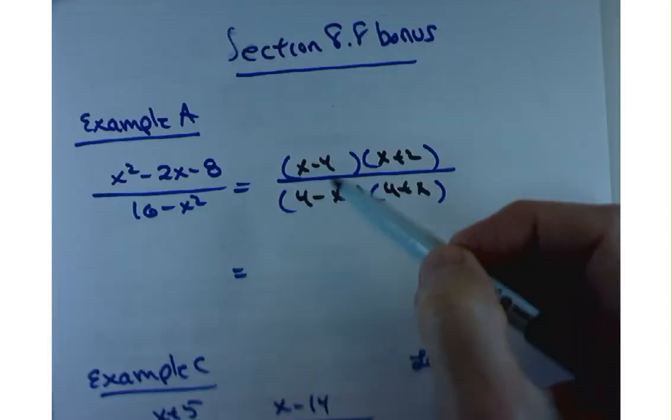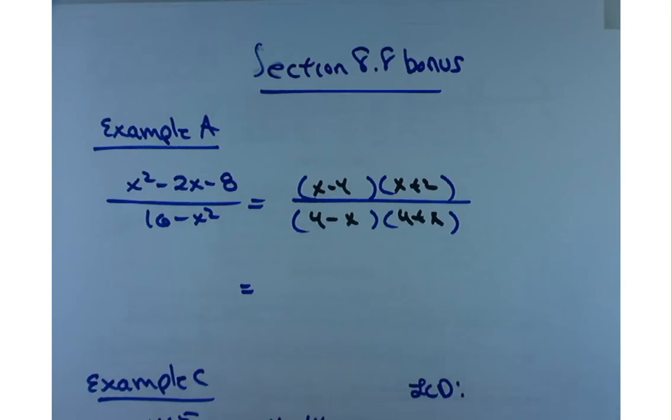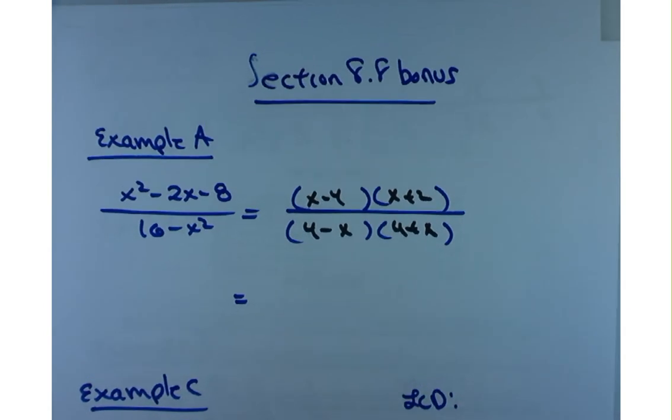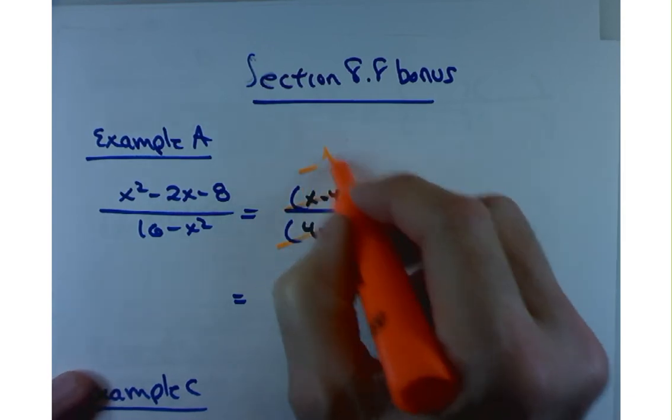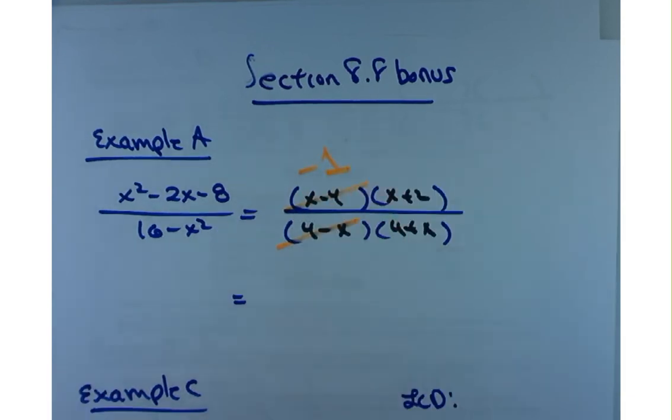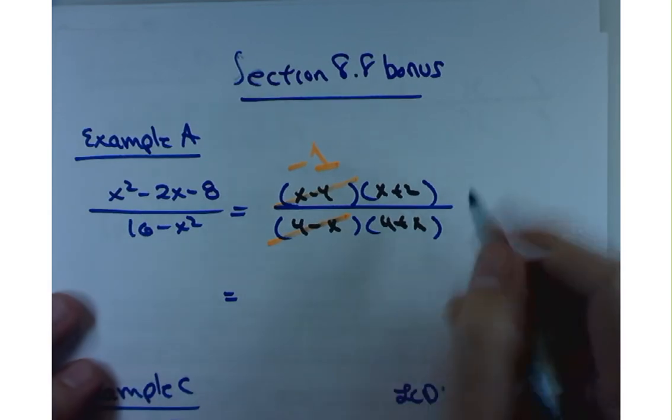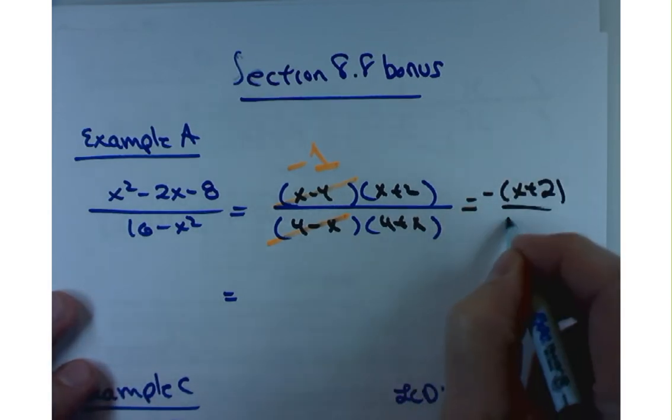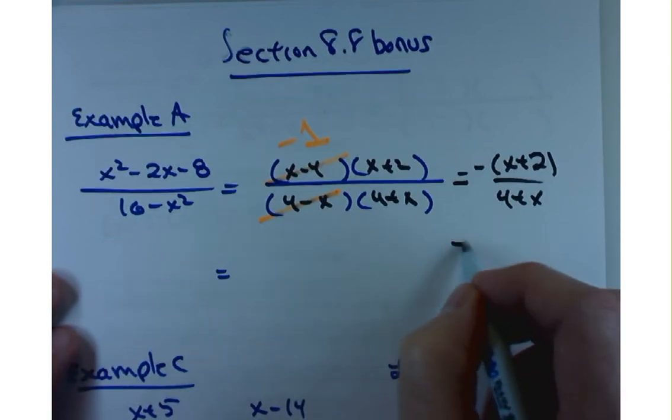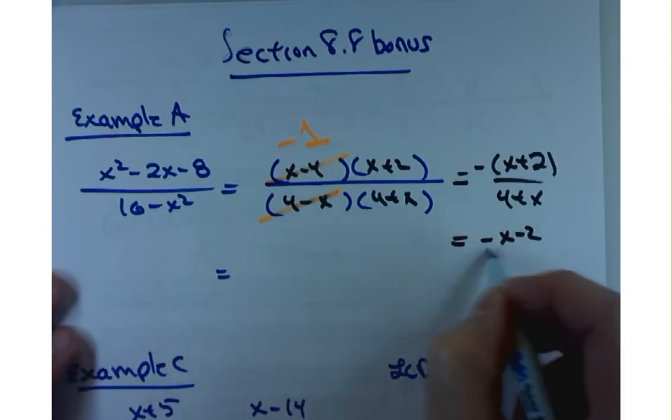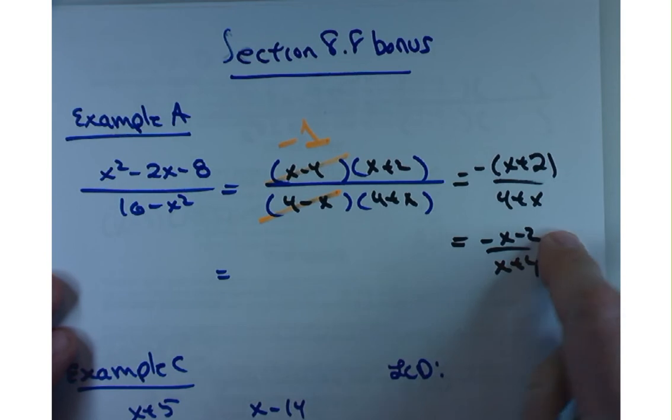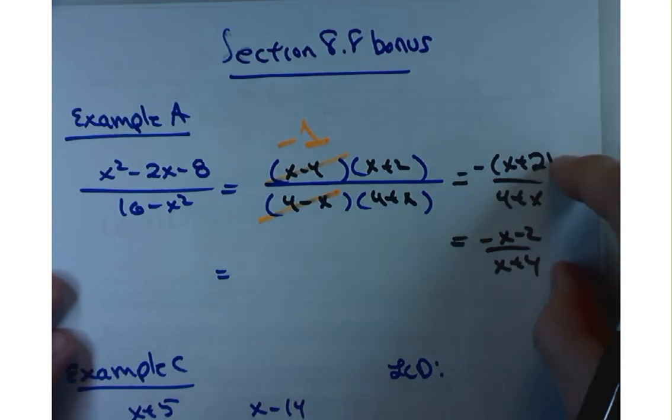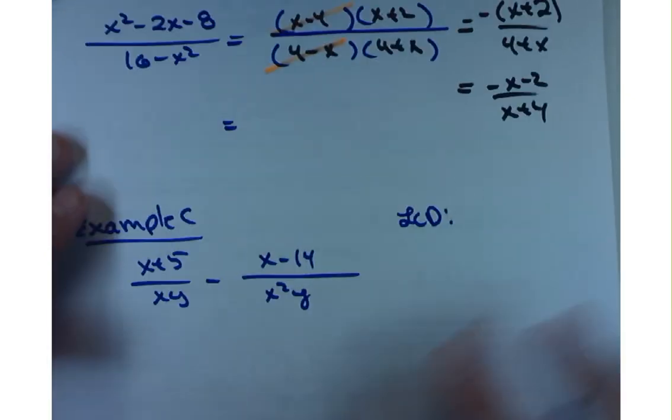So these things, they look really, really close. And that's the point of this problem is that these are opposites. So you can cancel these. Nothing wrong with canceling them, but you get a negative 1 when you cancel it. So what you'd be left with is negative of x plus 2 over 4 plus x. Now you can distribute and write negative x minus 2 over x plus 4 if you want. It doesn't matter. WebAssign should take either one. I will take either one.